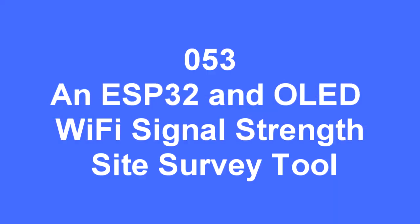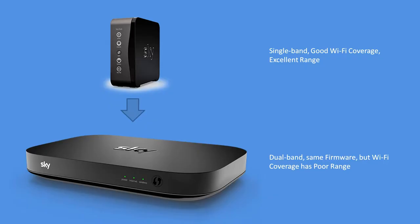Hello folks. This is a project inspired by my TV service provider in preparation for ultra high-definition TV coverage - a Wi-Fi signal strength site survey tool. They provided me with a hub upgrade to what's called a SkyQ hub. The original hub router was single band with good Wi-Fi coverage and excellent range, whereas the new SkyQ product is dual band but has very poor Wi-Fi coverage. This is how I went about solving the problem.